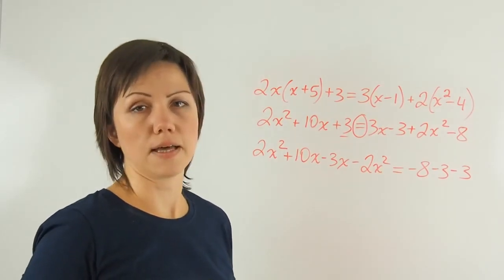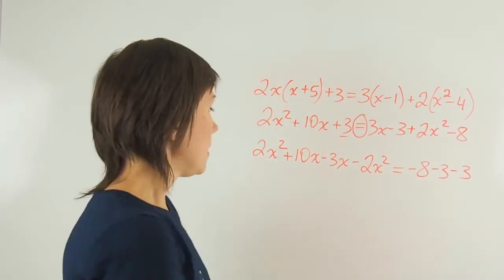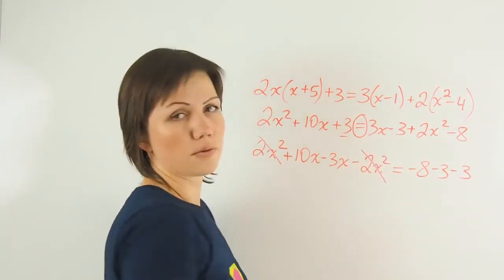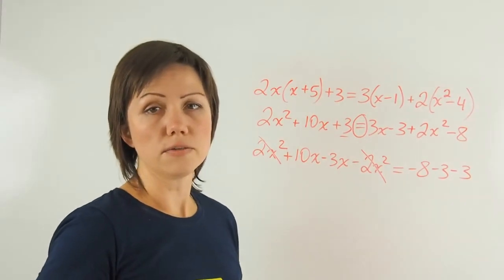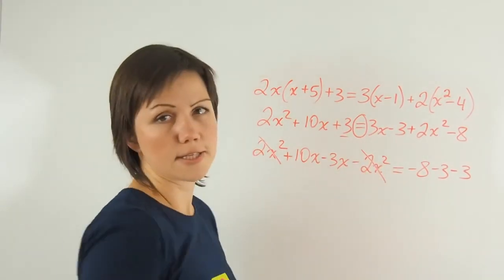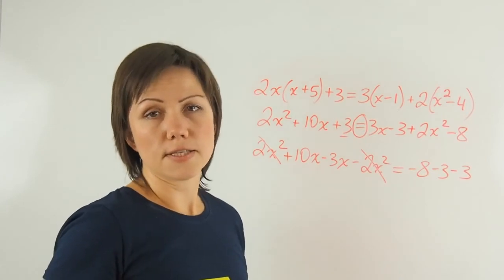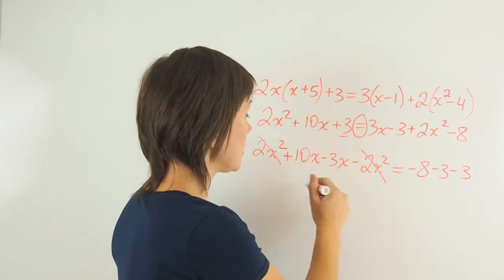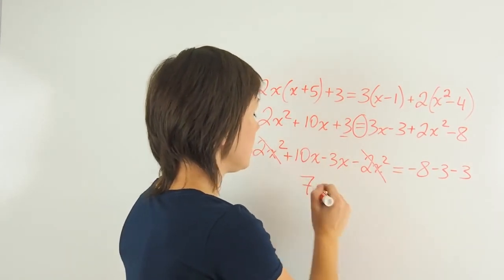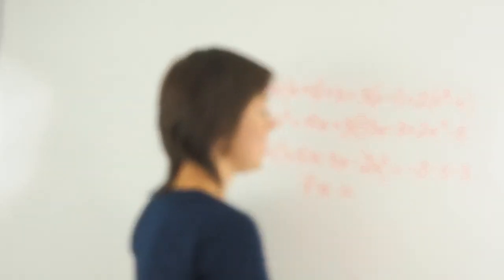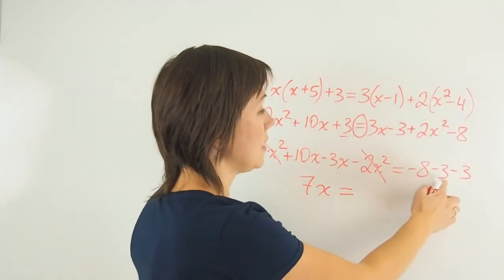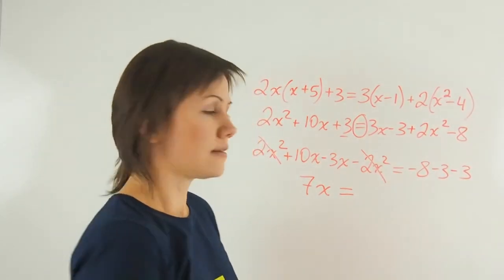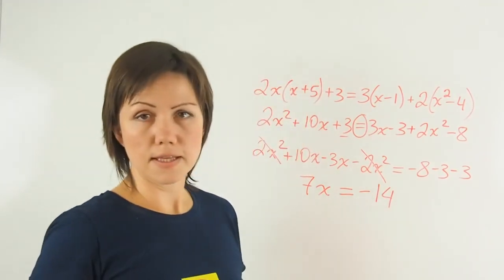Now I will collect like terms and add them and subtract them. As I can see, 2X squared and 2X squared will cancel each other out because one is positive, one is negative. They'll meet in the middle at 0 if I were to do it on a number line. Now this gives me 7X. And on the other side, I have negative 8, negative 3, and negative 3, which gives me negative 14. That's correct.